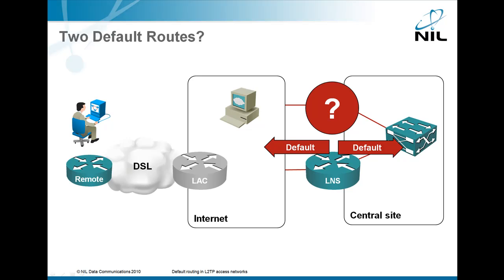So you need two default routes, each one pointing in a different direction, which obviously cannot work. Any idea what you could do?